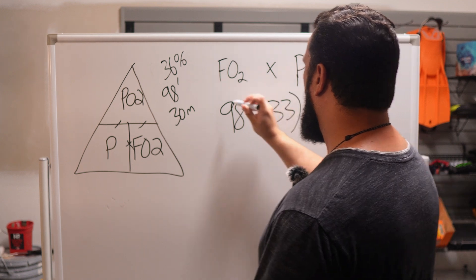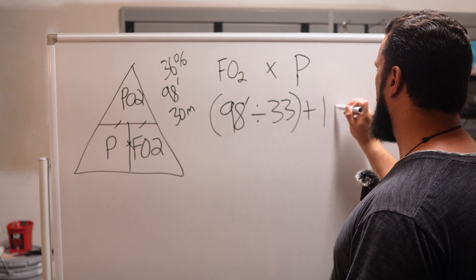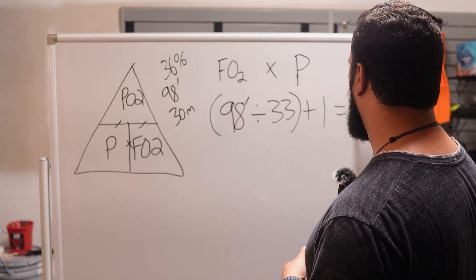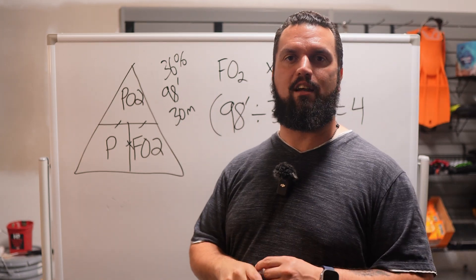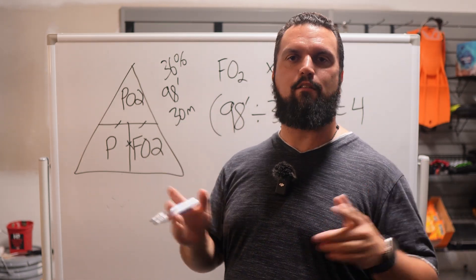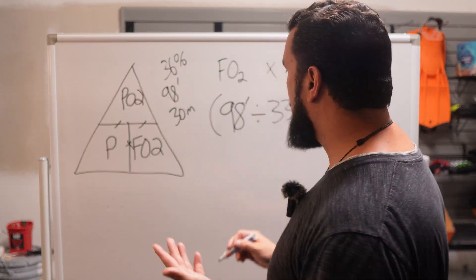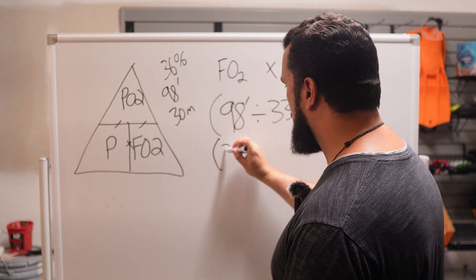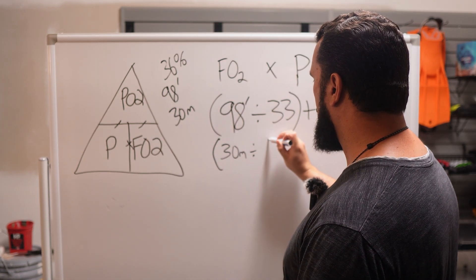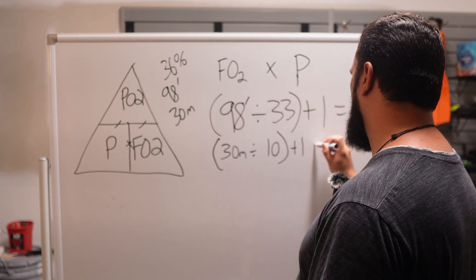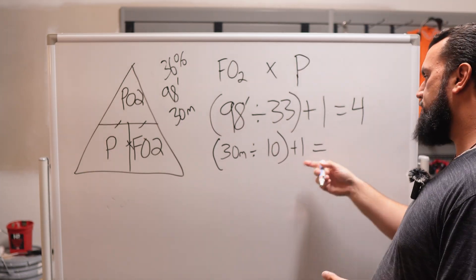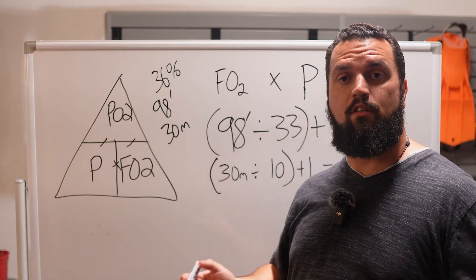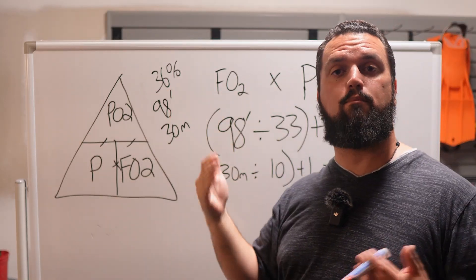For feet: 98 divided by 33, plus 1 equals approximately 3.96 atmospheres — we'll round to 4. For meters: 30 divided by 10, plus 1 equals exactly 4 atmospheres. So in either case we have 4 atmospheres as our P value. Our FO2 for 36% nitrox is 0.36.